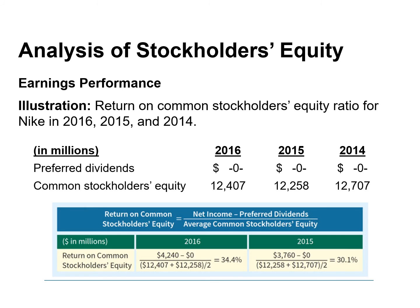Since Nike did not have any preferred dividends, return on common stockholders' equity is computed by dividing net income by average common stockholders' equity. To find the average, we simply take the beginning plus the ending and divide by two. From 2015 to 2016, Nike's return on common stockholders' equity has increased.